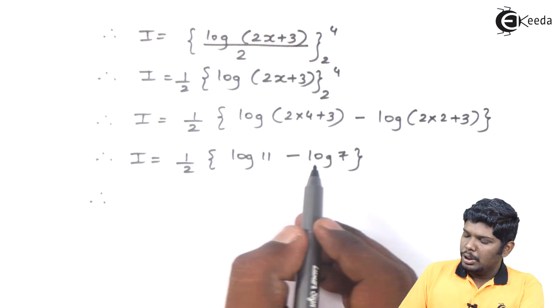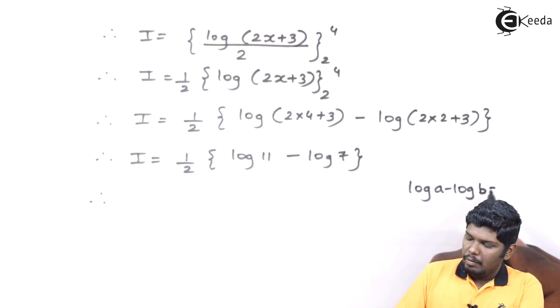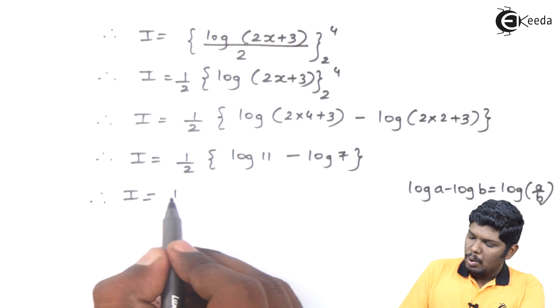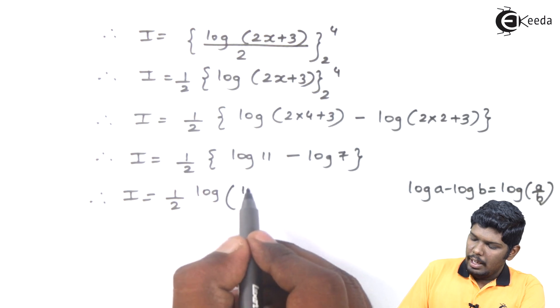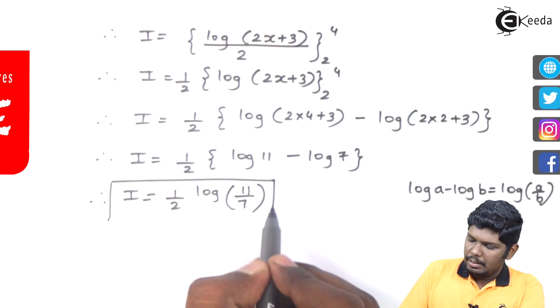Finally, we can use the property, log a minus log b, we know that it is log a by b. Therefore, I will be equal to 1 by 2, log of 11 upon 7. This is our final answer.